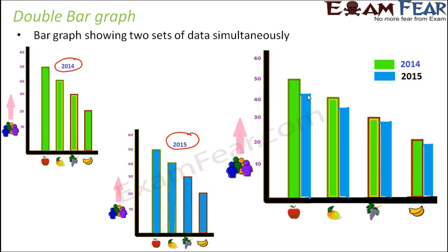Now, looking at this double bar graph, you can very clearly say that the liking for each of the fruits have decreased from 2014 to 2015. That means with passage of time, the liking for fruits is decreasing or is reducing. So this is an example of a double bar graph.